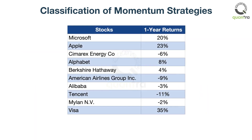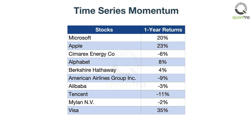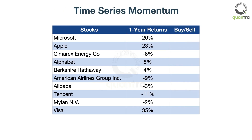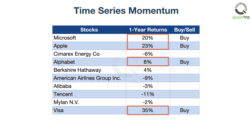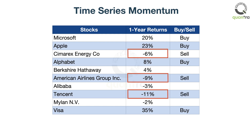Let's say you have 10 stocks in a portfolio and you want to create a strategy using time series and cross-sectional momentum. You calculate returns of all stocks for the past one year. In time series momentum, you buy the stocks that have returns above a certain level, say 5% over one year, and sell the stocks that have returns below a certain level, say minus 5% over one year.